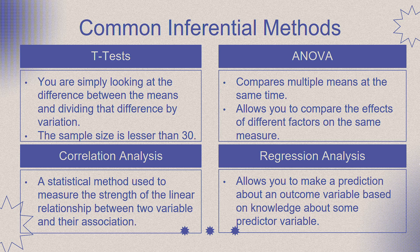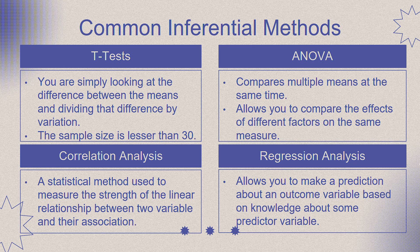Third is correlation analysis, a statistical method used to measure the strength of the linear relationship between two variables and their association. Correlation analysis calculates the level of change in one variable due to the change in the other. Last is regression analysis, which allows you to make predictions about an outcome based on knowledge about some predictor variable. There are several regression tests, such as simple linear, multiple linear, logistic, nominal, and ordinal regression, which differ on the number of predictors and outcomes.